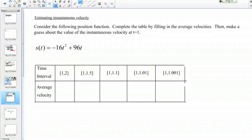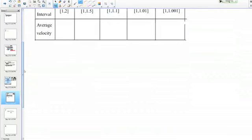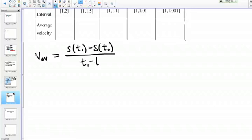Let's start by calculating those average velocities and filling them into the table. We need to remember how to calculate the average velocity. The average velocity is the change in position over the change in time. We often use this notation: average velocity equals S(t₁) - S(t₀) over t₁ - t₀. Here t₁ and t₀ represent the two different time points we're looking at. So let's start calculating.